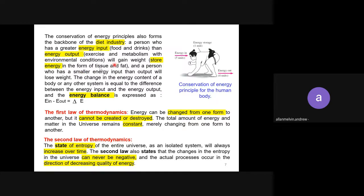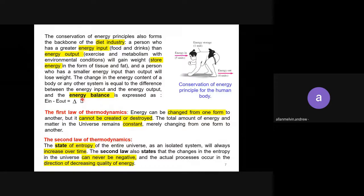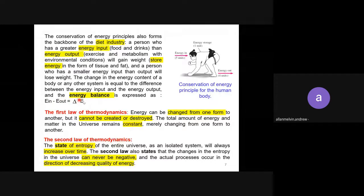If you take in four units and your energy output is five units, then your body will burn fat. You need to play around with your energy input and output in order to lose weight. The change of energy content of the body equals the difference — that is what we call energy balance: energy input minus energy output equals the change in energy.